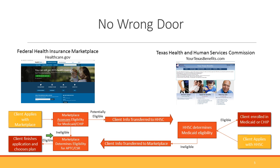If the client is determined actually ineligible for Medicaid or CHIP, their information is transferred back to the marketplace, and the marketplace reaches out to the client and says it looks like you weren't eligible — please come back in and finish your application. If they are eligible for marketplace coverage, they can finish their application and choose a health plan with subsidies. Now going from the other direction — if they apply with HHSC and are determined ineligible for Medicaid, they are then transferred over to the marketplace and the same process happens.